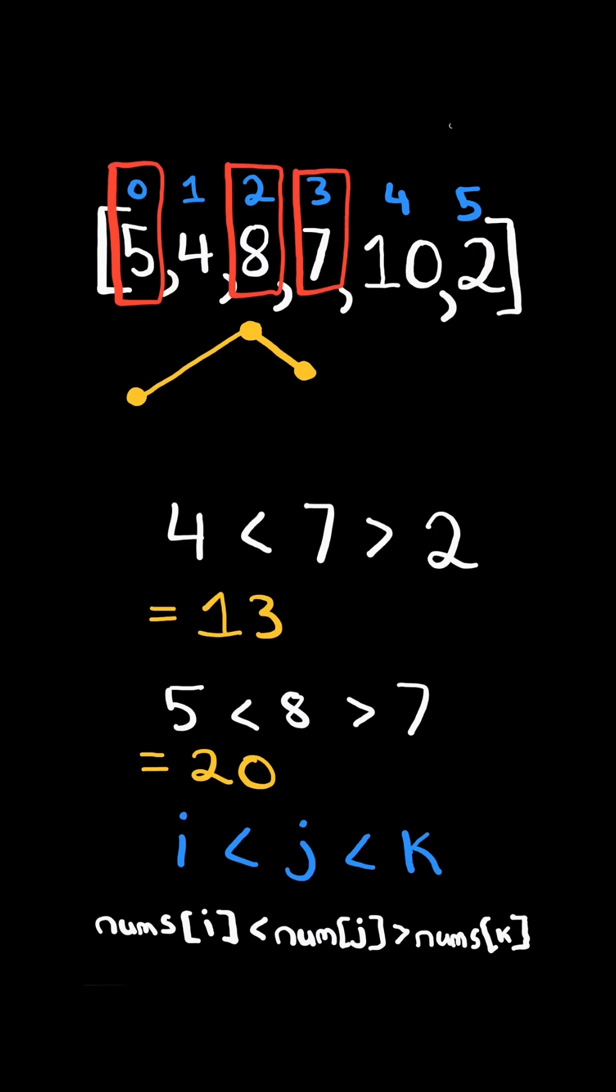There can be many different combinations of mountain triplets. Return the minimum sum. If no such triplet exists, then we return negative 1.